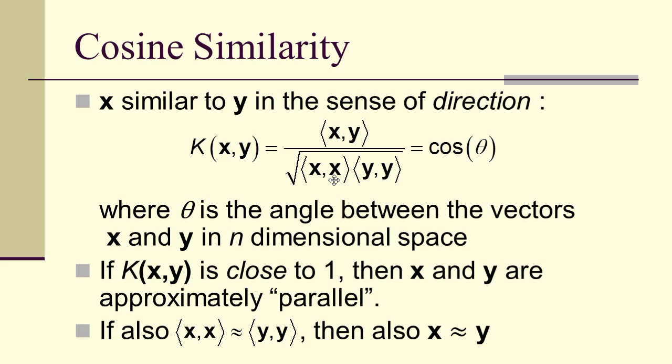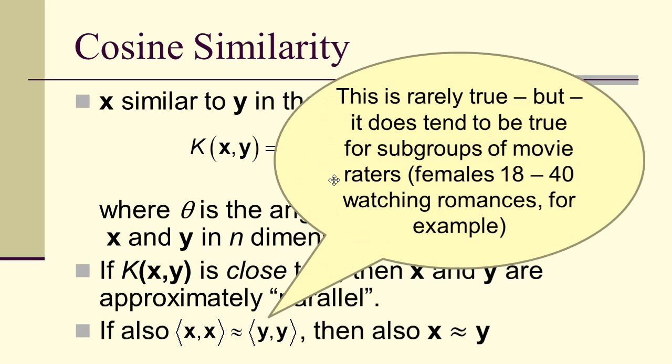Cosine similarity measures similarity in the sense of direction — it's called cosine similarity because it's the cosine of the angle between vectors x and y in n-dimensional space. If k(x,y) is close to 1, then x and y are approximately parallel. If x·x is about the same as y·y, then cosine similarity would say x is about the same as y. This is rarely true in general but tends to be true for subgroups — such as females watching romances or teenagers watching action-adventure.